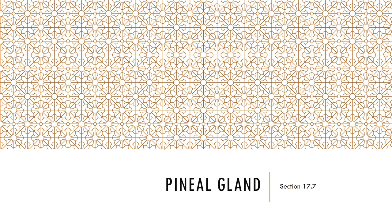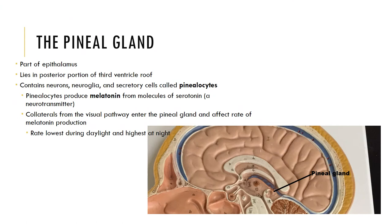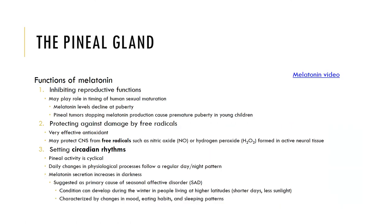Now let's look at the pineal gland. The pineal gland is located in the roof of the third ventricle of the brain, called the epithalamus region. It is composed of special secretory cells called pinealocytes, whose major product is melatonin, whose concentrations rise and fall in a diurnal cycle — lowest during daylight hours and highest at night. Melatonin appears to maintain basic circadian rhythms, which are daily changes in physiological processes following a regular day-night pattern. Melatonin also protects against tissue damage by acting as an antioxidant and protects the central nervous system from free radicals such as hydrogen peroxide. Melatonin may also inhibit reproductive development and functioning.